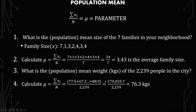You're just adding all the weights together and then dividing by the number of people in the city, and it gives you 76.3 kilograms. So that's the average weight of the people in the city.